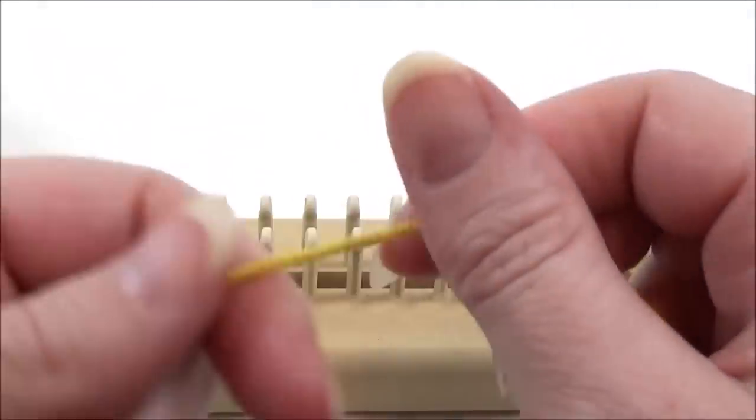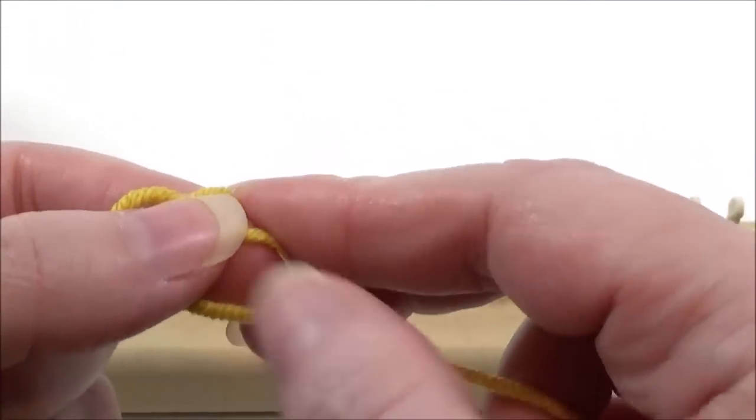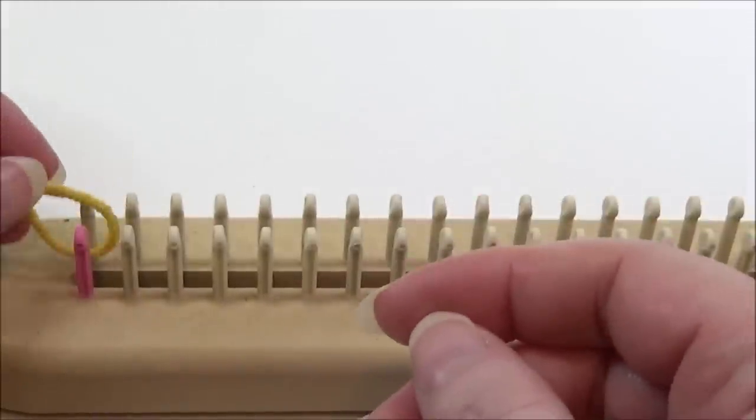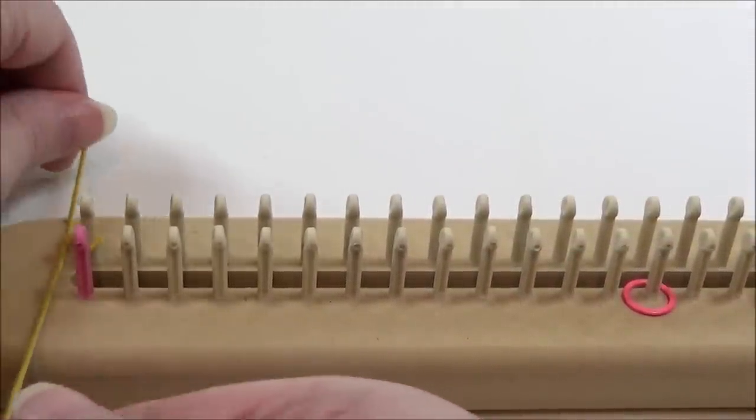To start, we're going to make a simple slipknot and anchor that down on a peg that is not our starter peg. We just want one that's next to it.